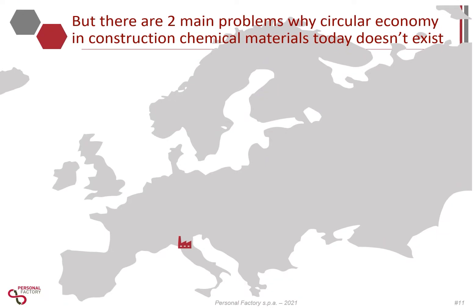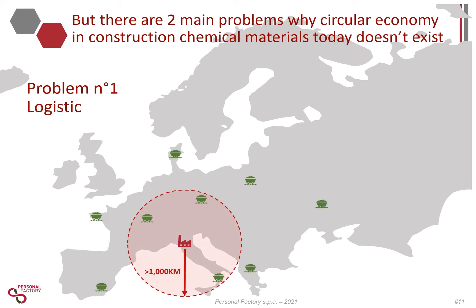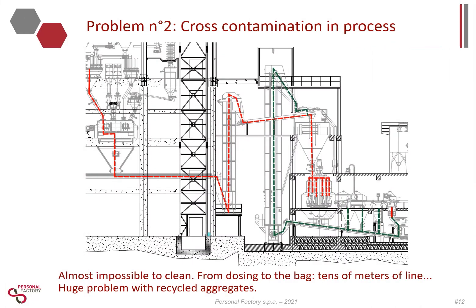The reason why no one does this comes down to two industrial problems. The first is logistics: it is not sustainable to transport recycled aggregates thousands of kilometers to a centralized factory. The second is cross-contamination between batches — in a classical plant, the production line is almost impossible to perfectly clean from dosing to bagging, since there are tens of meters of line. This is a huge problem with recycled aggregates.